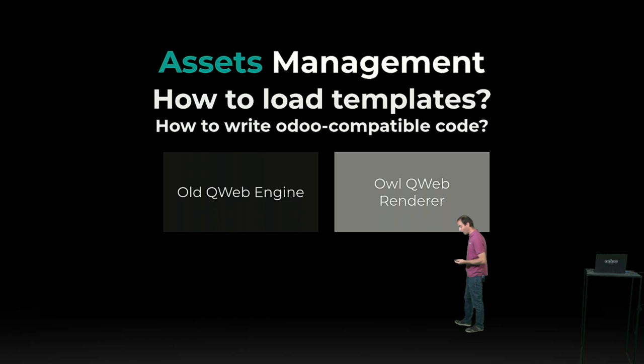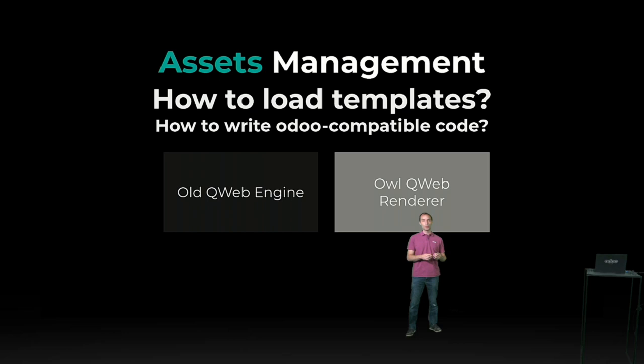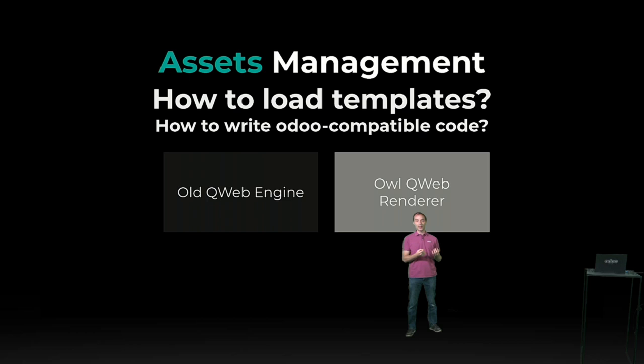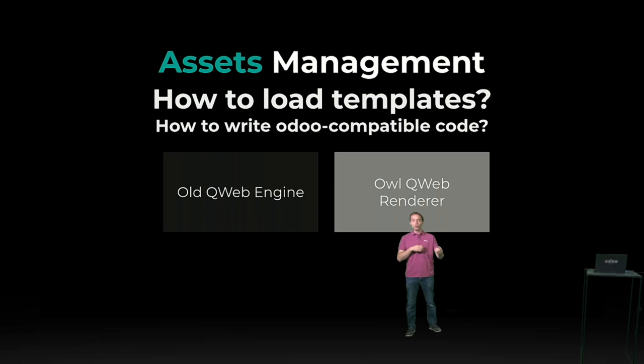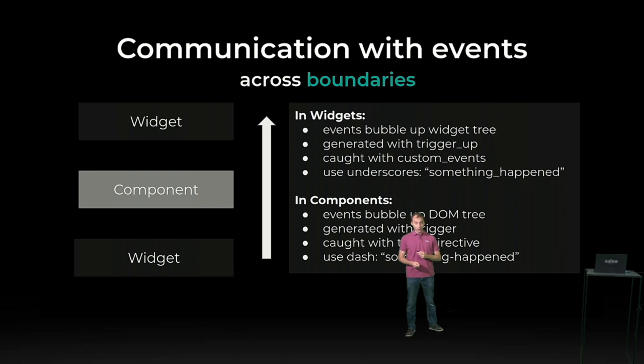The first issue is assets management. You describe your QWeb template inside XML files — most of them static XML files. Those files are bundled together and sent from the server to your web client. The web client now needs to know what to do with these templates: should it send them to the old widget renderer or to the new OWL QWeb engine? That's one of those issues you will encounter while working with OWL.